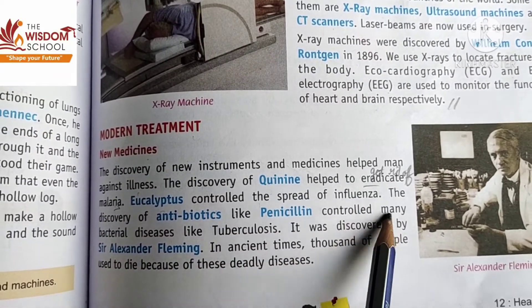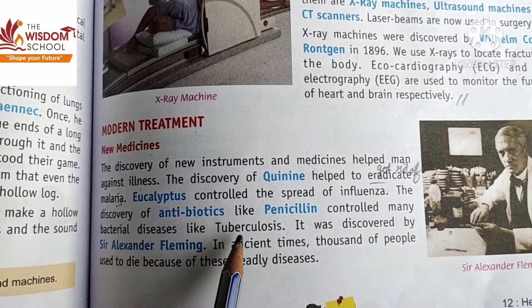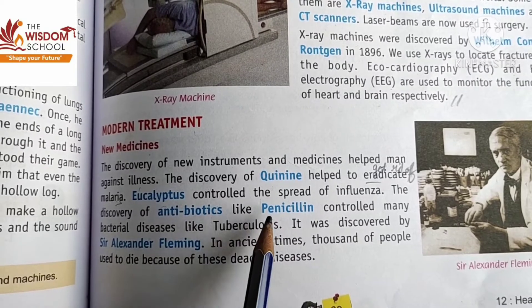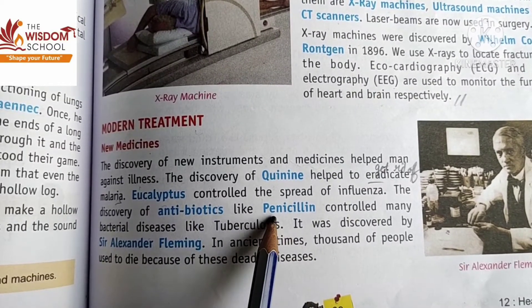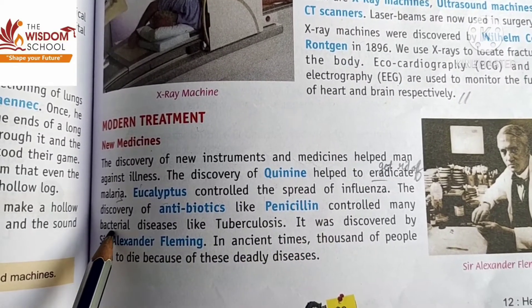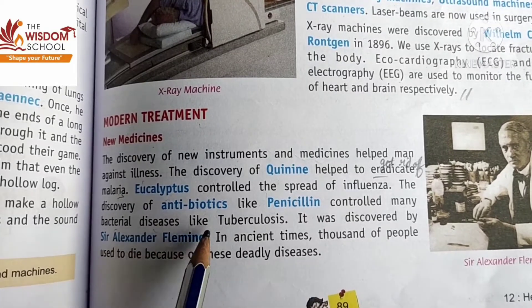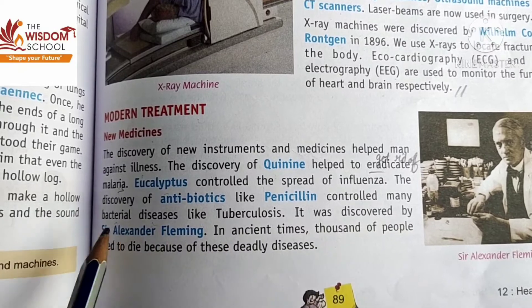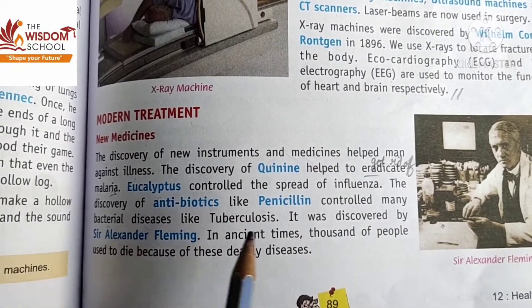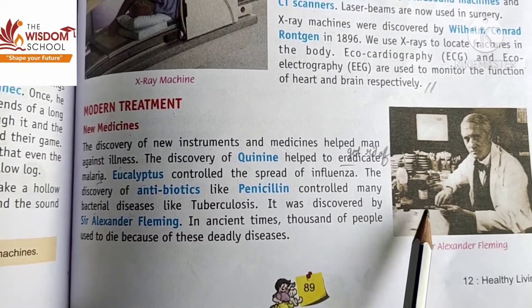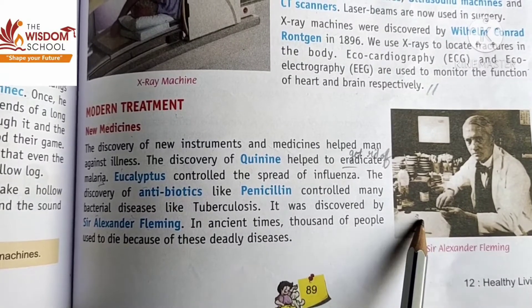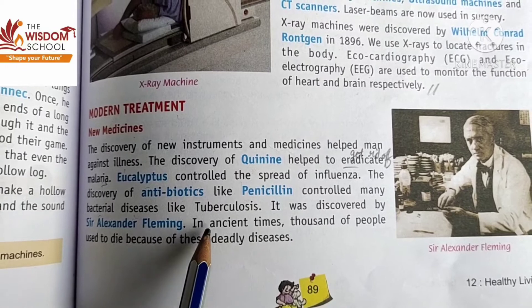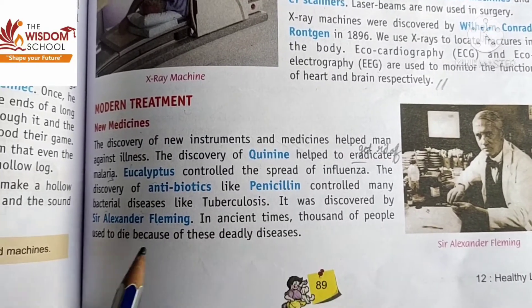The discovery of antibiotics like penicillin controlled many bacterial diseases like tuberculosis. Antibiotic ki jab discovery hui, like penicillin, isse many types of bacterial diseases control mein aayi. It was discovered by Sir Alexander Fleming — see here, this is the picture of Sir Alexander Fleming.